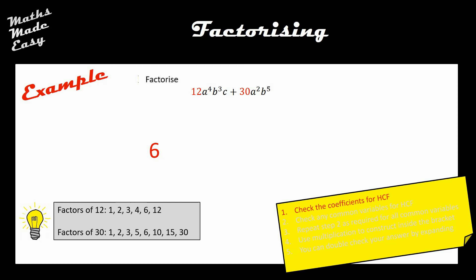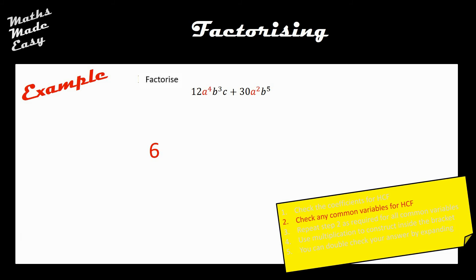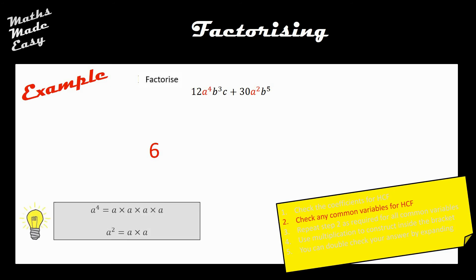The 6 is going to build the portion of my expression that lives outside the bracket — it starts with a 6. Then step 2: I check any common variables for highest common factors. I can see that there are a's in both terms. a⁴ is a×a×a×a and a² is a×a. What's common to both is a×a, so I can factorize out an a², which is common to both.